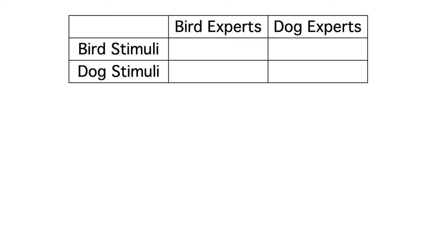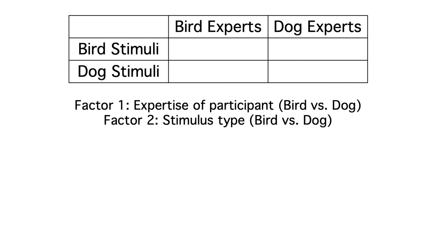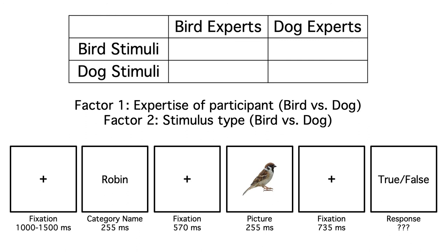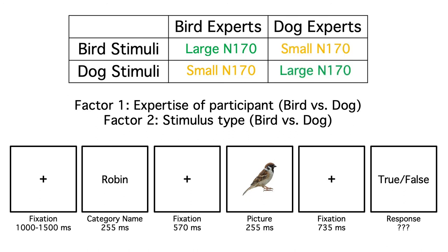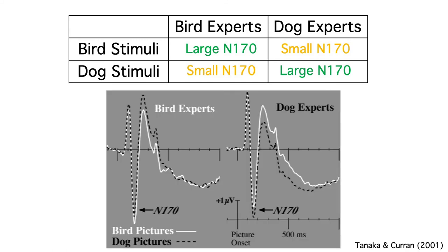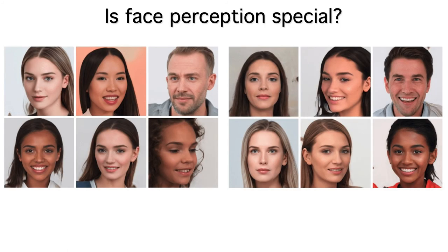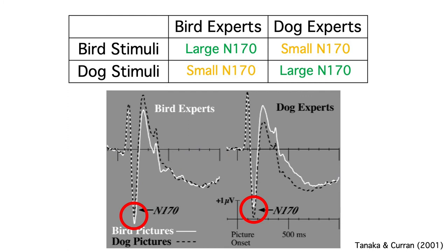The specific task doesn't usually have much impact on the N170. If the N170 is influenced by expertise, they predicted they would see a larger N170 for birds than for dogs in bird experts, but a larger N170 for dogs than for birds in dog experts. And that's exactly what they found. The N170 was larger for bird pictures than for dog pictures in the bird experts, but larger for dog pictures than for bird pictures in the dog experts — just as almost everyone has a larger N170 for faces, bird and dog experts have a larger N170 for stimuli in their domain of expertise.